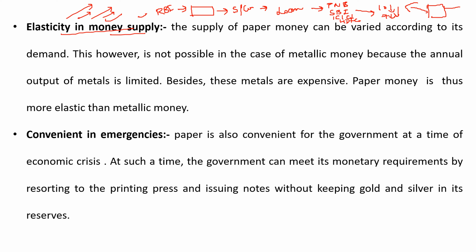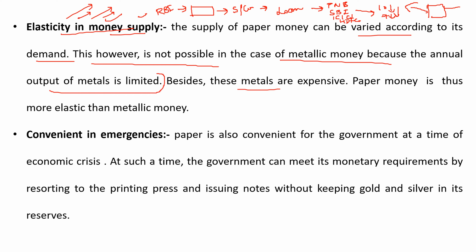When there is an economic crisis, the country can adjust money supply to meet demand. This is however not possible in the case of metallic money, because the annual output of metals is limited. Gold and silver are very expensive and the quantity available is very limited in nature, so their supply cannot be expanded easily. Paper money is thus more elastic than metallic money.